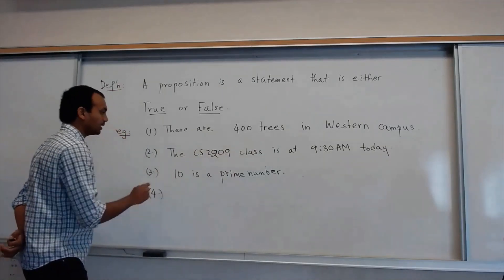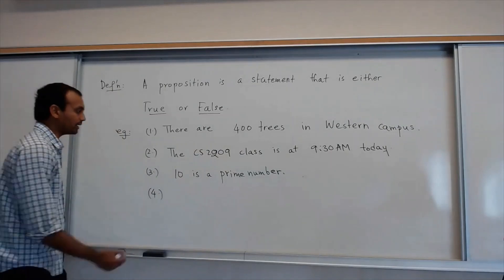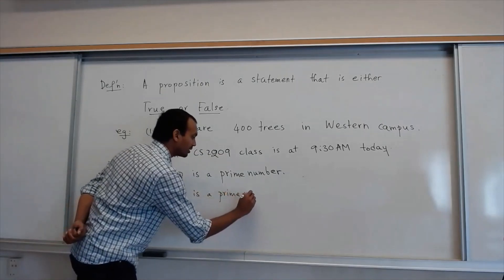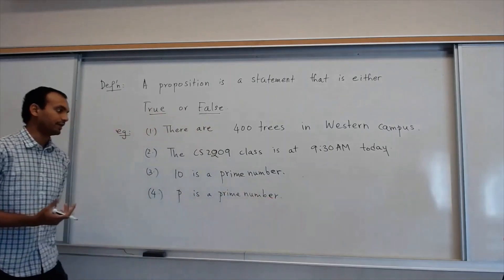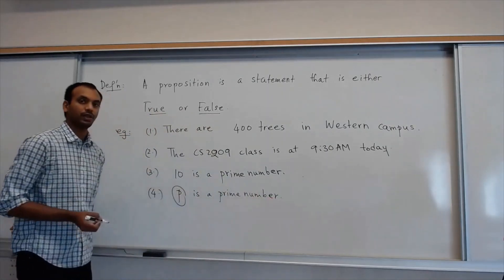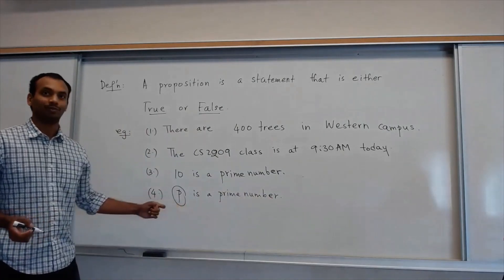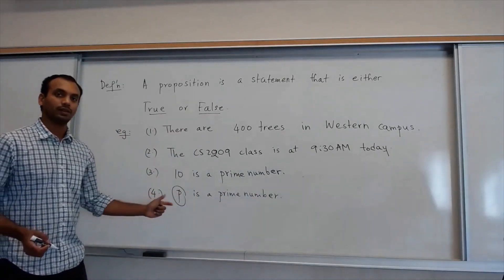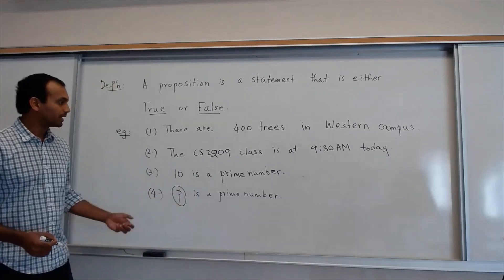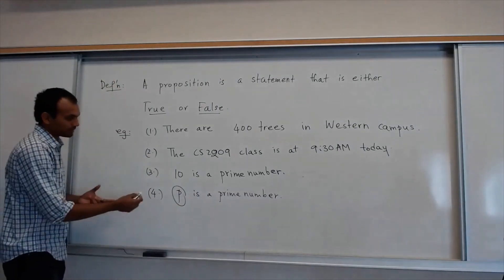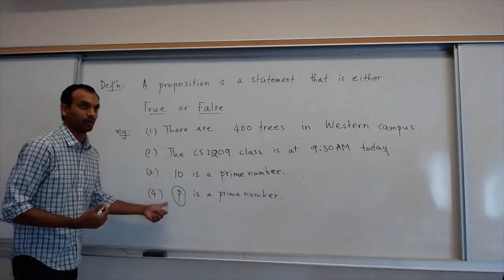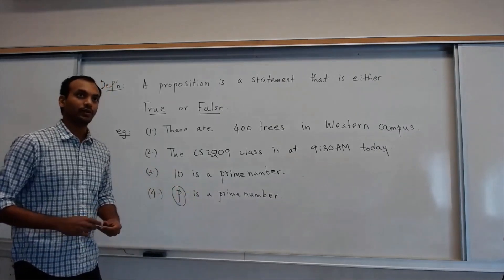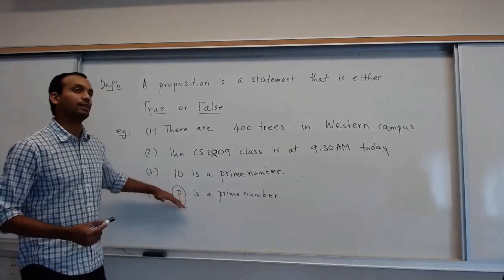For example, let's take a more general version of the third statement. I said '10 is a prime number.' Instead, I'll write 'P is a prime number.' This could have a definite truth value, but it depends on P. If P is 3, this is true. If P is 4, this is false. So if you give a prime value for P, then this is true; otherwise it is false. Because of this, this is not quite a proposition — it's a proposition which depends on a parameter.